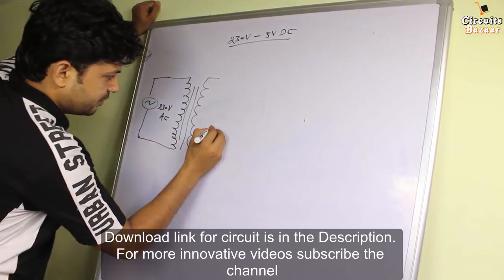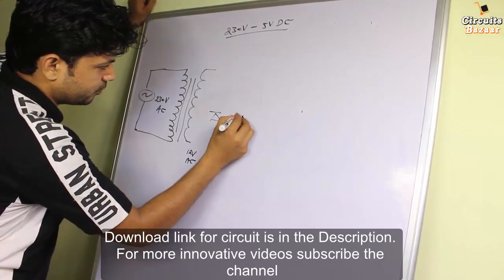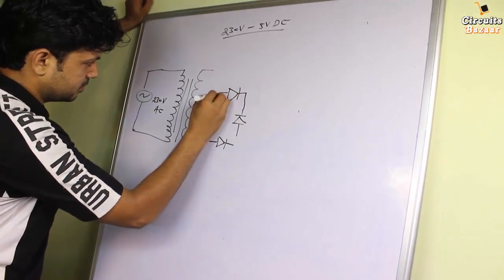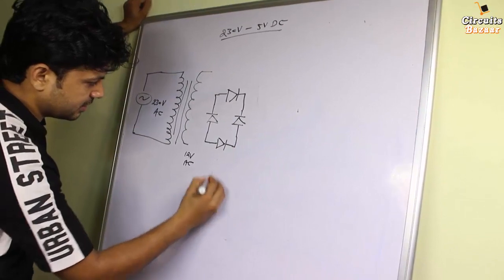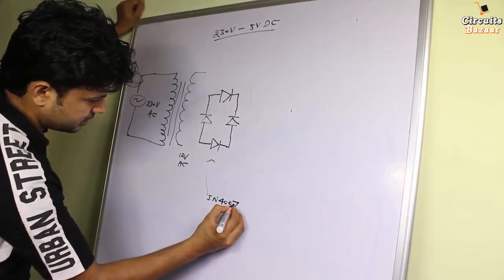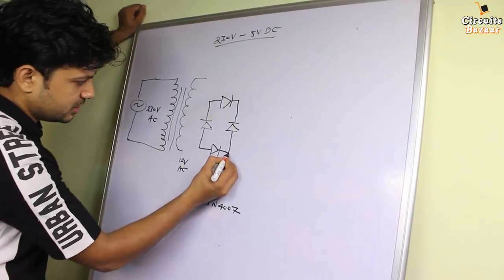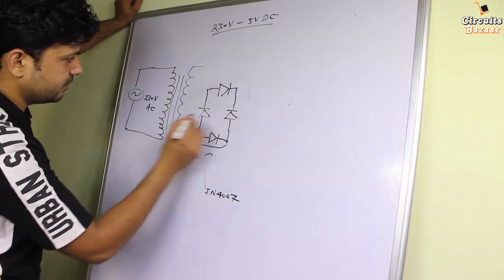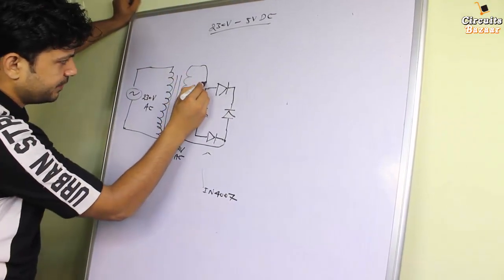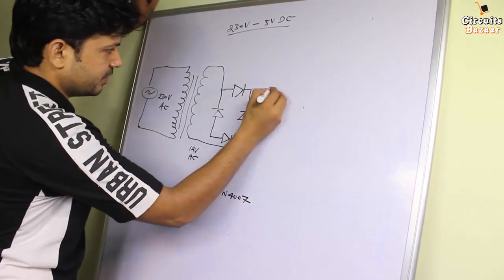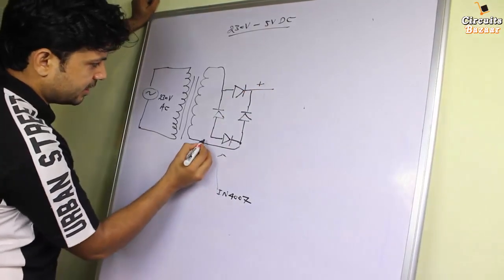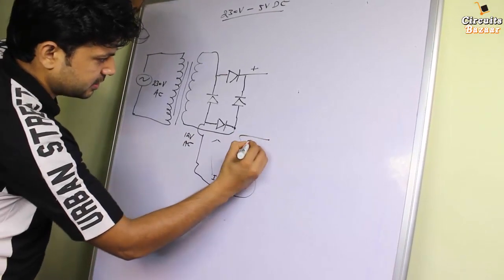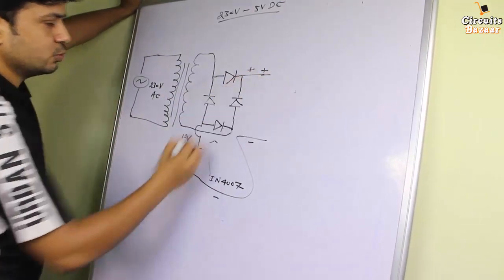The next step is a bridge wave rectifier. In a bridge wave rectifier you use 4 diodes placed in this configuration. The diode number you can use is IN4007. The AC input goes to the two points where the negative of one diode meets the positive of another diode. The positive DC output comes from where the two negatives of diodes meet, and the negative comes from where the two positives meet.